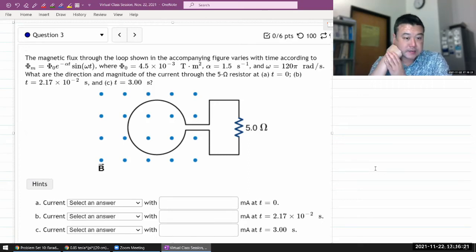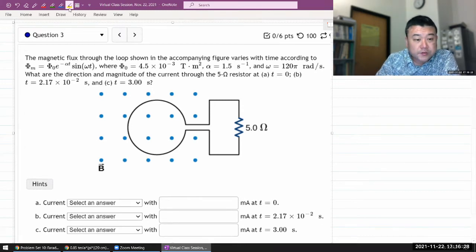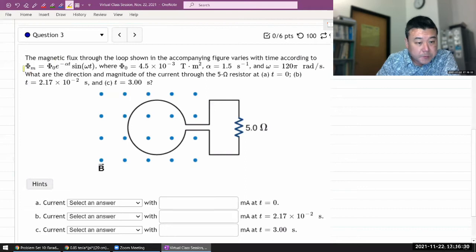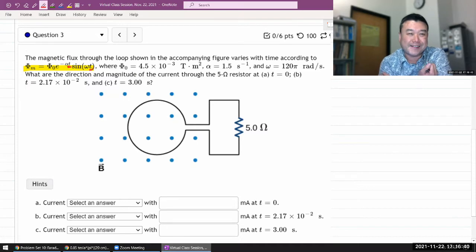Okay, question three. It says the magnetic flux through the loop in the accompanying figure varies with time according to this expression here. It's good to know - somewhat complicated function of time t, which is good because we are going to be taking derivatives, likely not integral, where they give the numerical value for this coefficient and they give you the numerical value for this coefficient and omega.